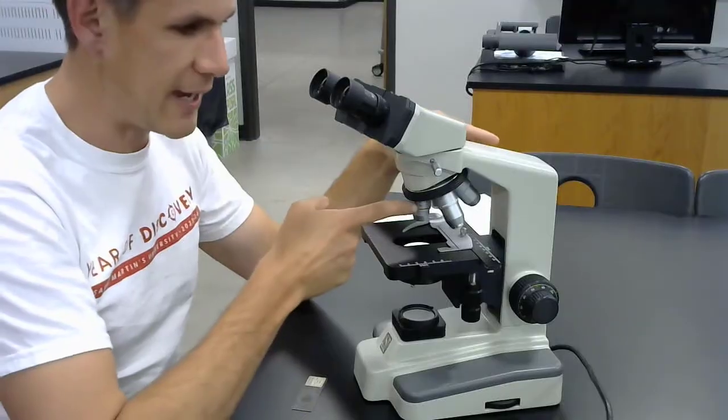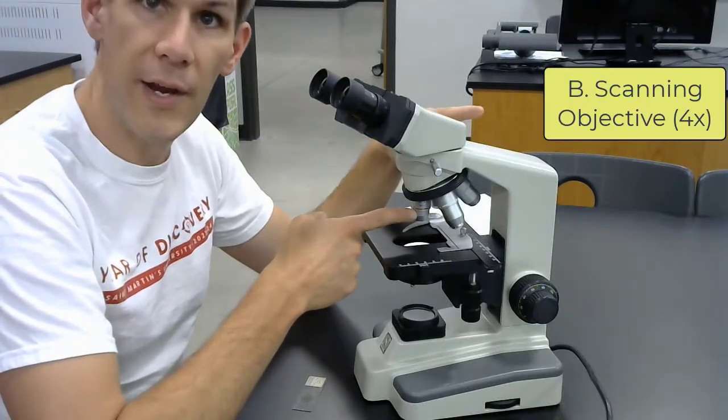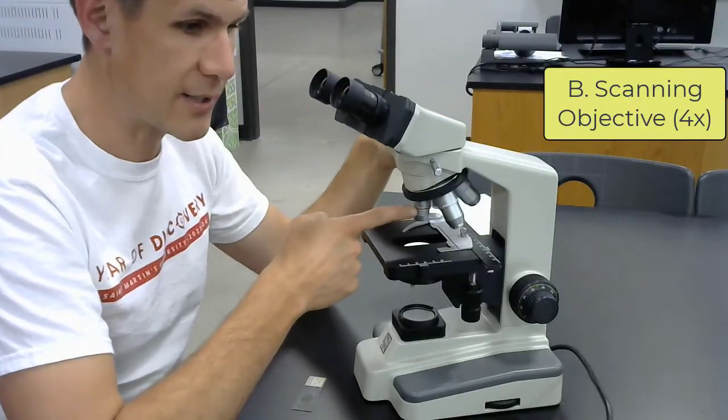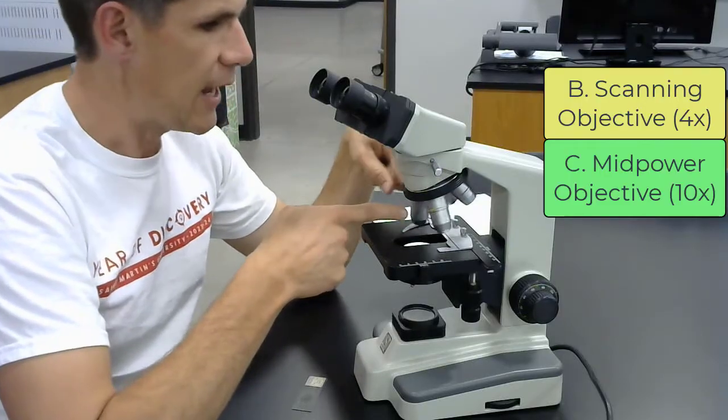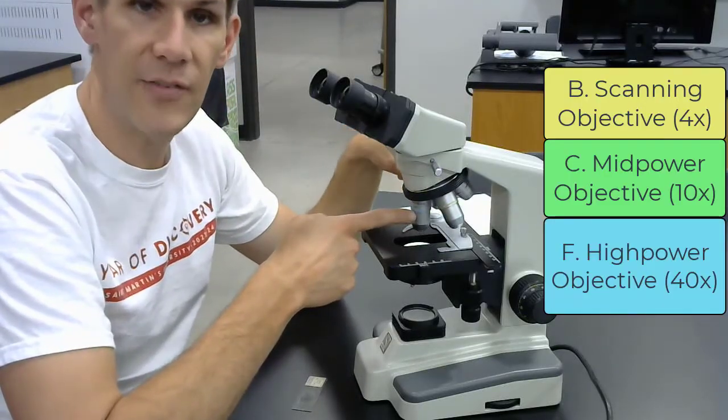Below that we have the scanning objective, which has a number 4 on it. It is the lowest power objective. The next one would be the mid-power objective, which has a number 10, and the high-power objective, which has the number 40.